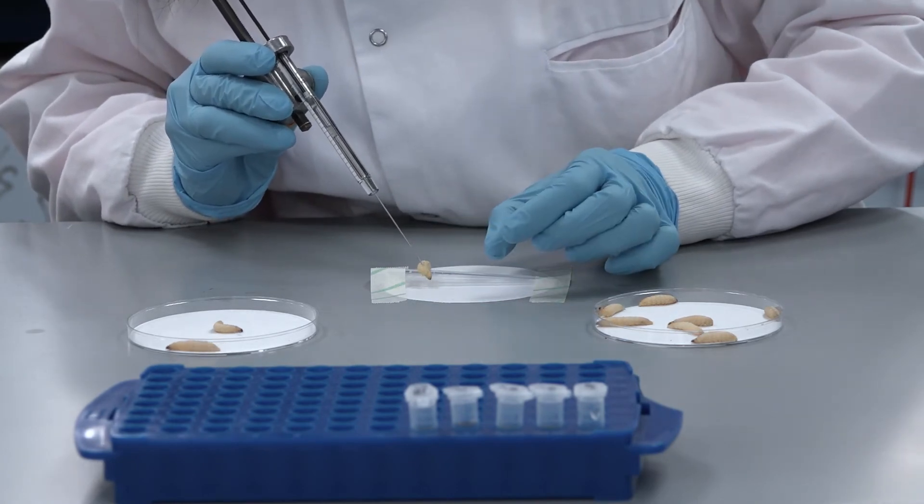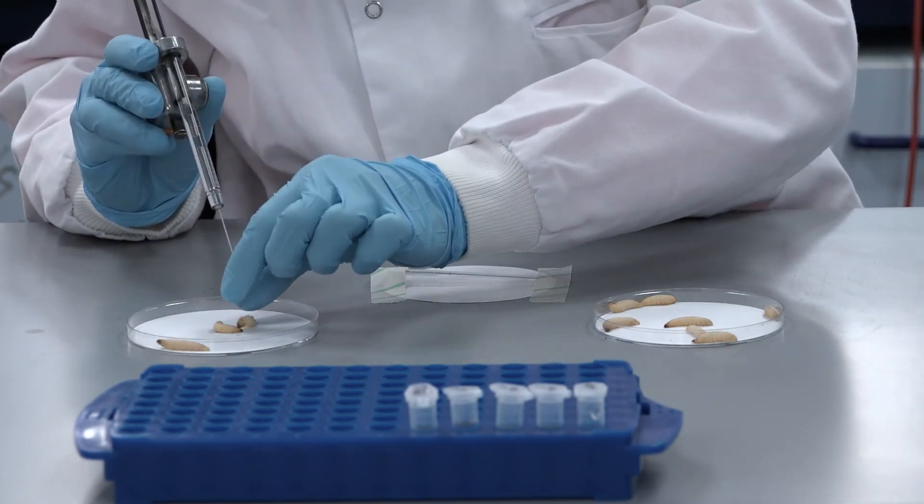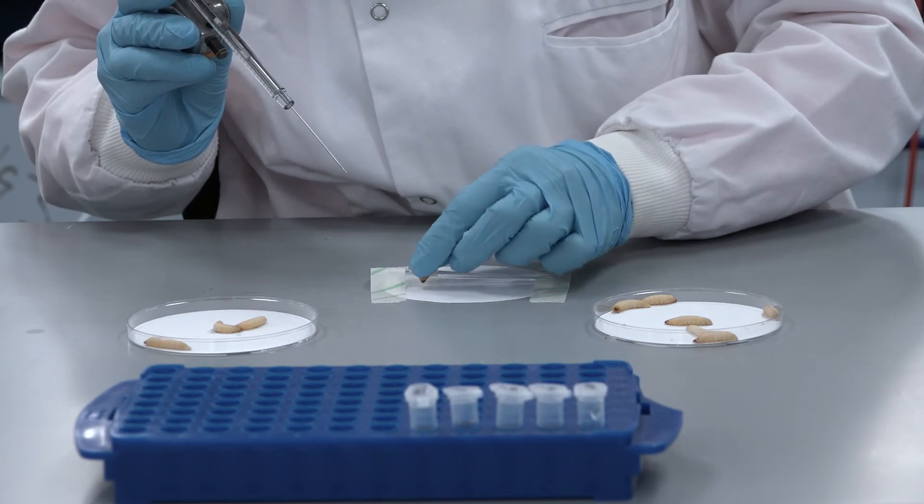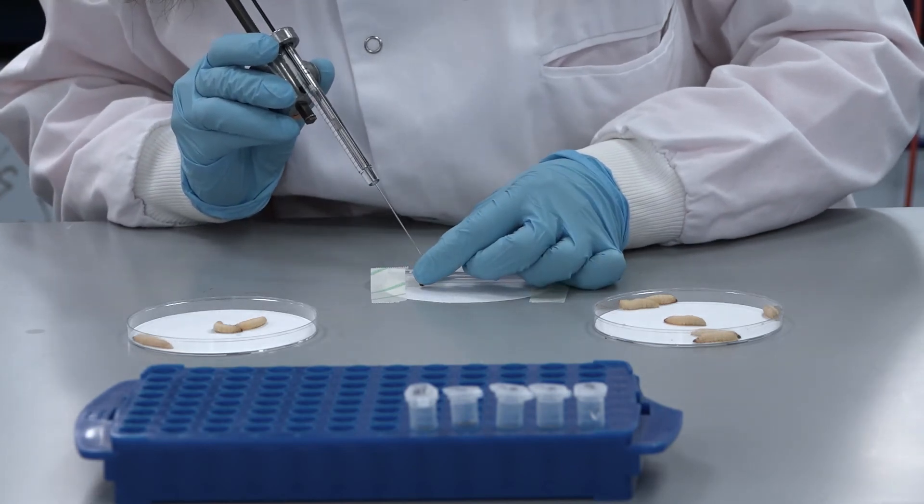In addition, set aside 10 TrueLarv Galleria melanella as no injection controls, and 10 larvae should be injected with PBS as an injection control.